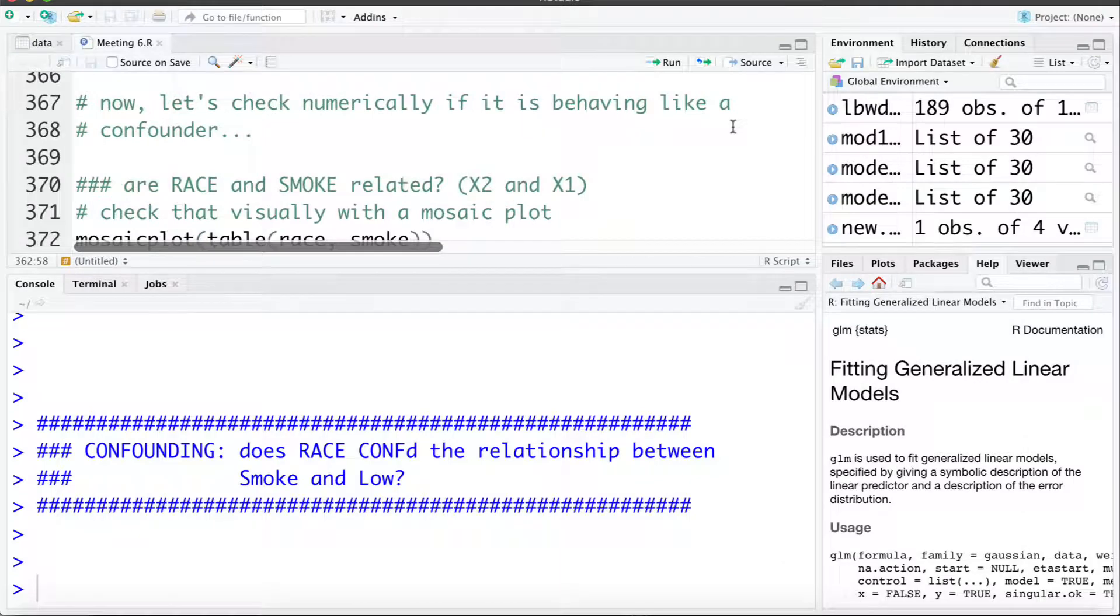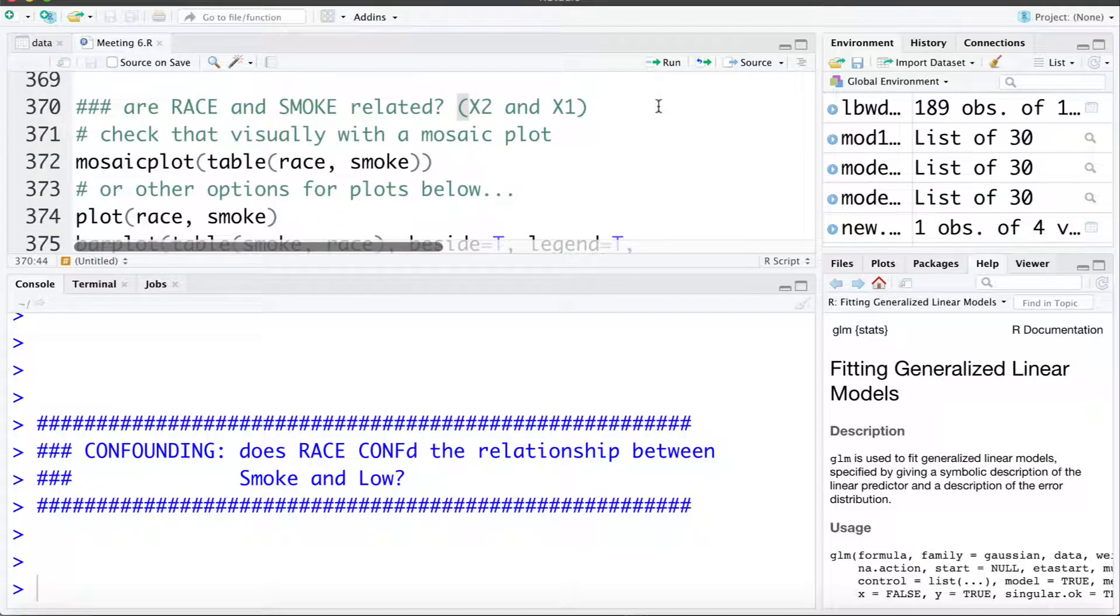So now we're going to go ahead and check numerically if it's behaving like a confounder. So the first thing we can check is if the race variable and smoking variable are associated or more generically if x2 and x1 are associated. These are both categorical variables so we can make a mosaic plot to visually examine that. So let's go ahead and do that here.